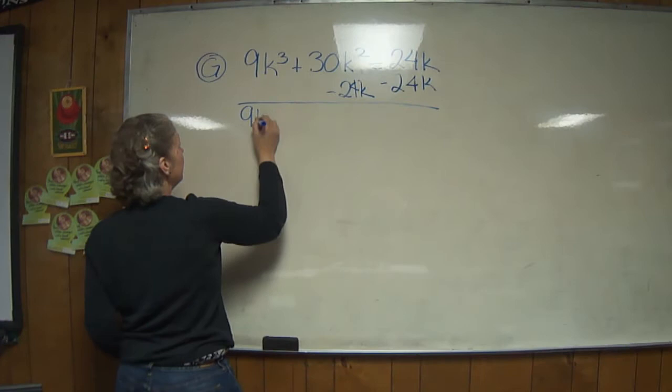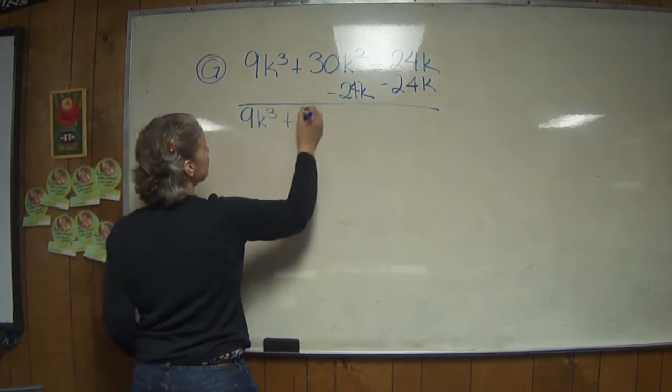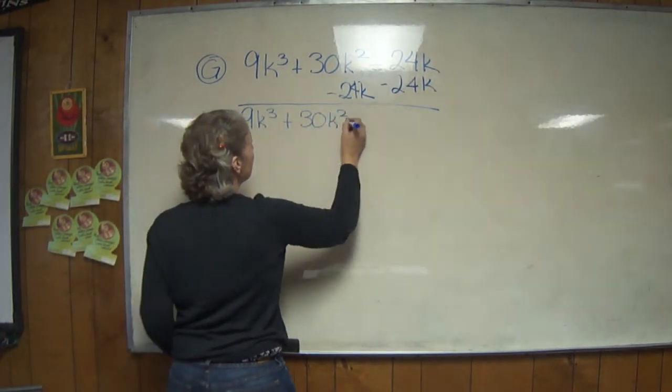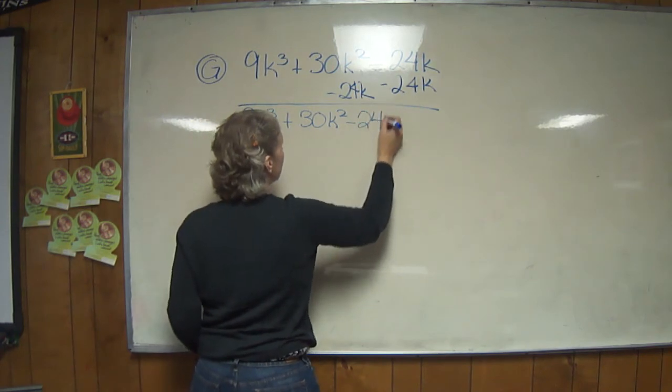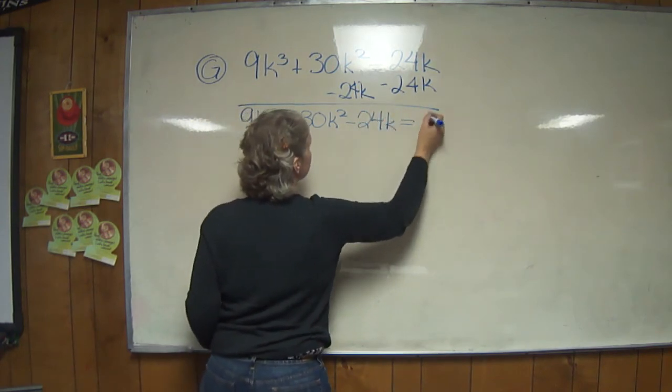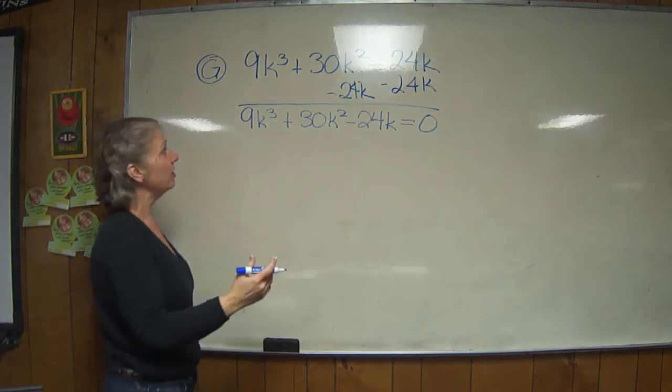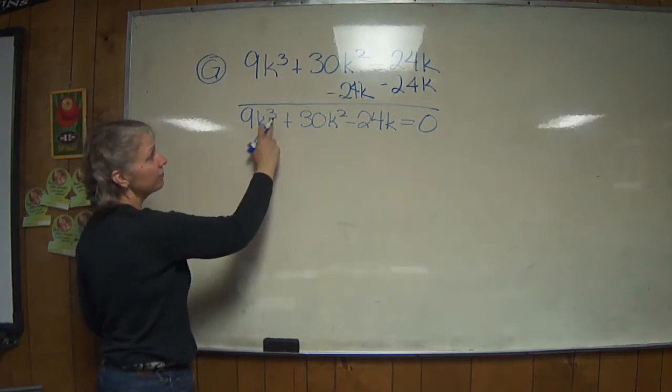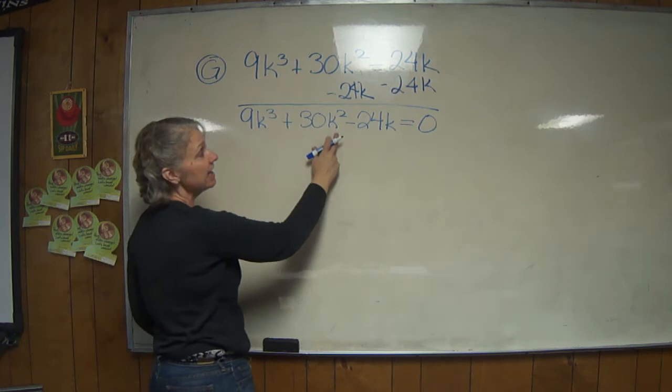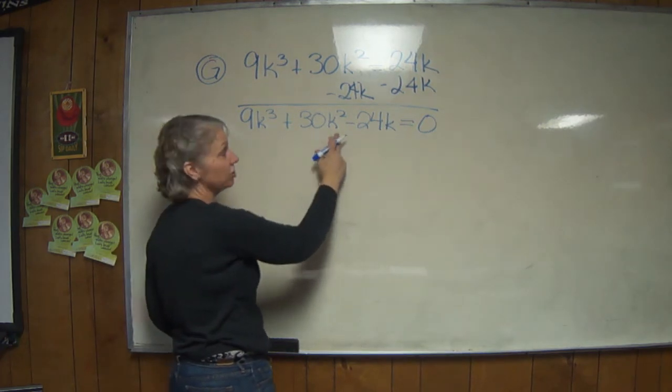So we're going to take 9k³ + 30k² - 24k = 0. It's in declining order because this is k³, it has the largest exponent. This is k², it has the next largest. This is k to the first.